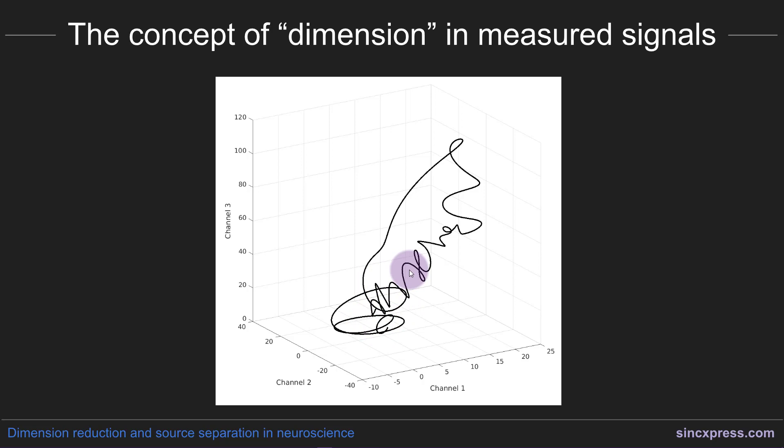The take-home message from this video is that although there are several different definitions and uses of the term dimension, for signal processing and in particular for dimension reduction and source separation, the term dimension is most often used to indicate each measurement point in the data.